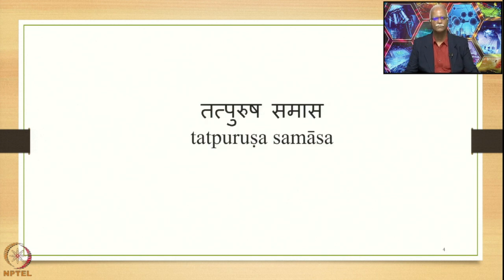In this course we are concentrated on the Tatpurusha Samasa. We have said that Tatpurusha Samasa is the most productive amongst the four Samasas in Sanskrit, namely Vyayibhava, Tatpurusha, Bahubrihi and Dvandhva. Tatpurusha Samasa also has many subtypes in comparison with the other major subtypes and their varieties. Panini has composed quite a few sutras to deal with the features of the Tatpurusha Samasa.